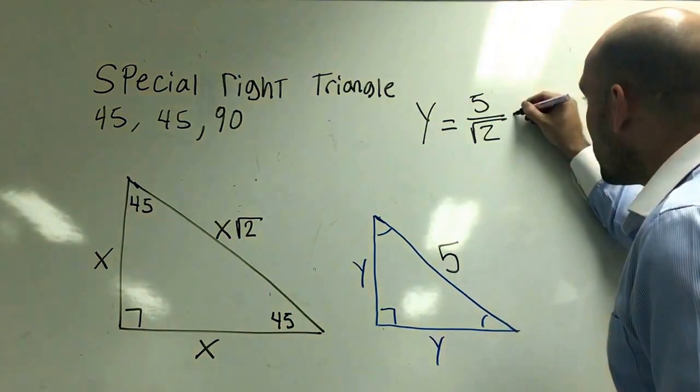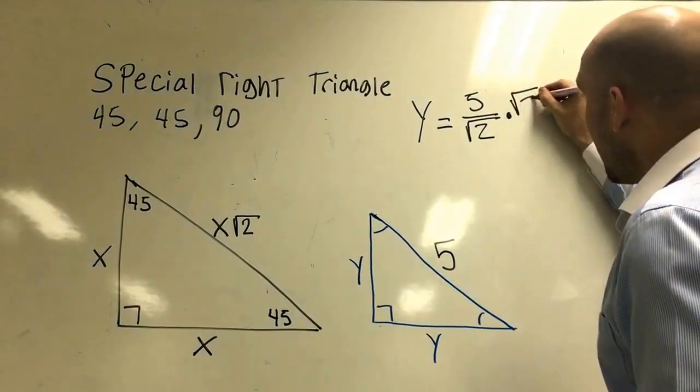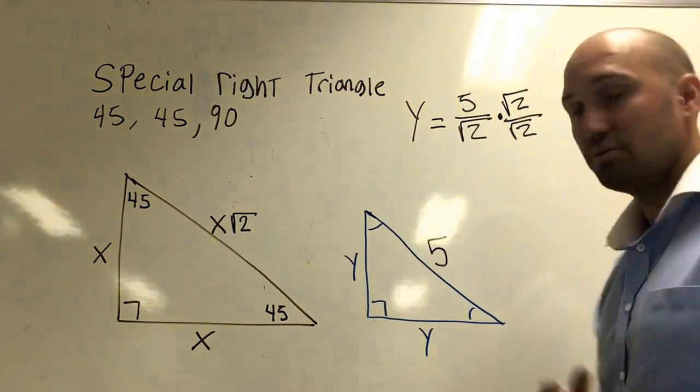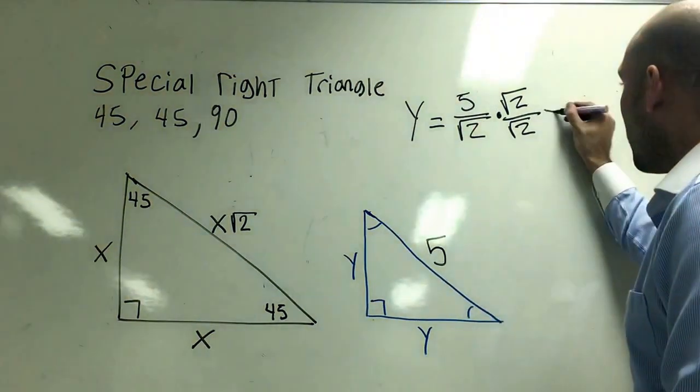By doing that, I can multiply this top and the bottom by square root 2. Now by doing that, I'm going to multiply through.